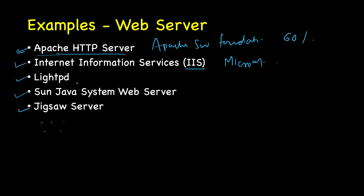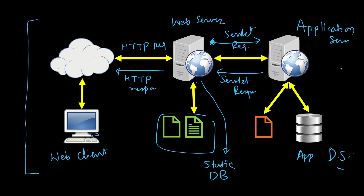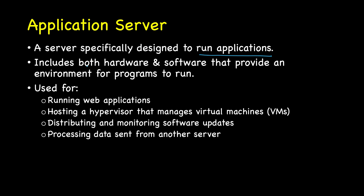Now let's look at the application server. An application server is a server specifically designed to run applications. It includes both hardware and software that provide an environment for programs to run. Uses of an application server include running web applications, hosting a hypervisor that manages virtual machines — which can create, start, stop, and reset VMs — distributing and monitoring software updates, and processing data sent from another server.